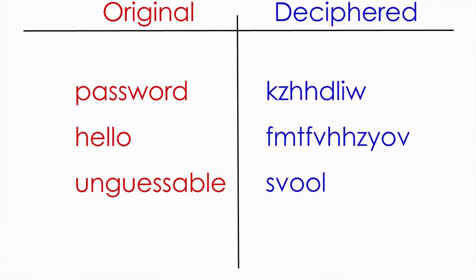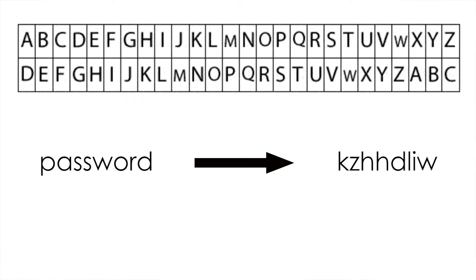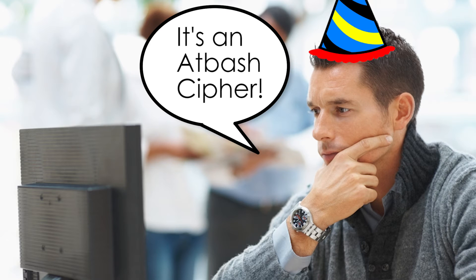So if both hashing and encryption store your password in a secure way, what are the key differences? For starters, encryption is one-to-one reversible. So if you enter the word 'password' into the encryption, there's only a single output that matches it on the other side. For example, with our atbash cipher, 'password' becomes this jumbled mess. Notice how you cannot enter anything except the word 'password' to get that same mess out. Also, encryption is reversible — so if you get the encryption key, the hacker will have a party.